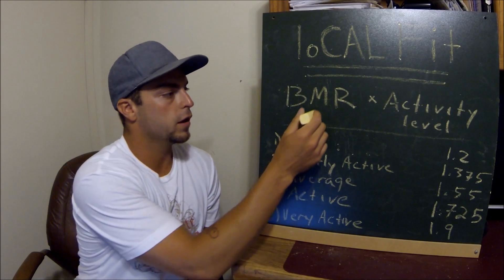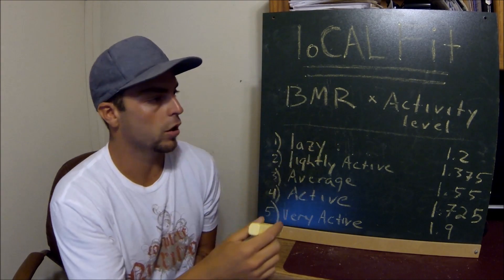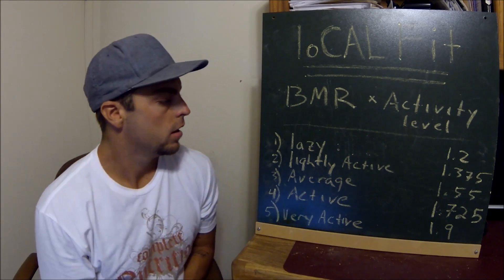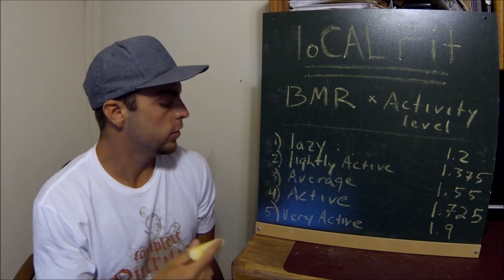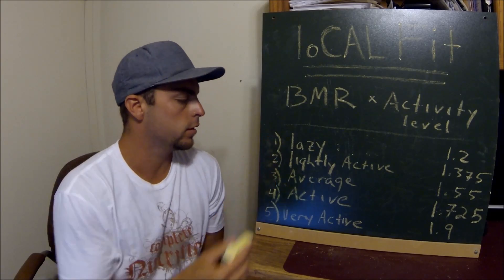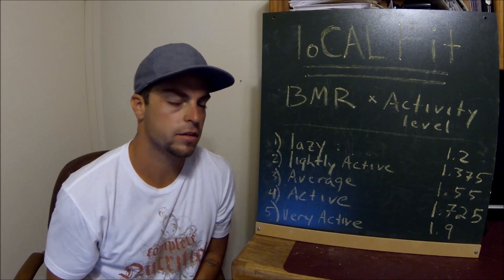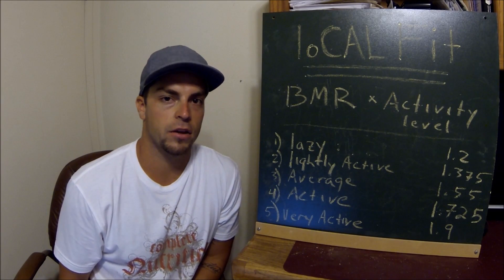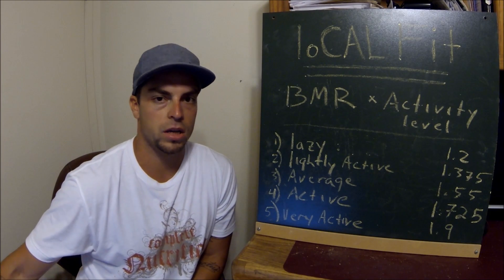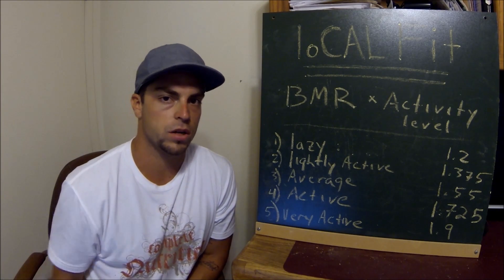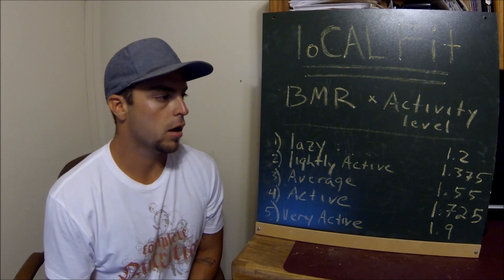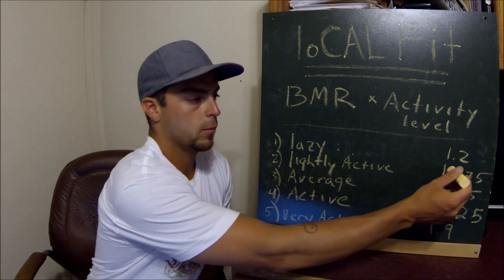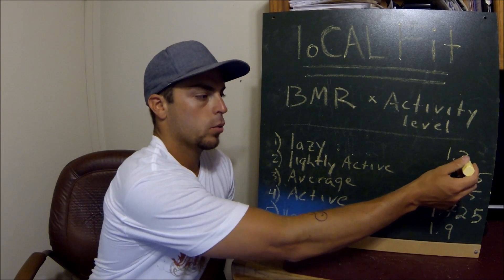Once we've figured out our BMR, we're going to multiply that by an activity level. There are five different levels. The first one — let's call it what it is — you're lazy. You really don't do anything other than get up to go to the bathroom or eat; you pretty much watch TV all day. But even then you're still going to burn some calories, so we multiply that BMR by 1.2.